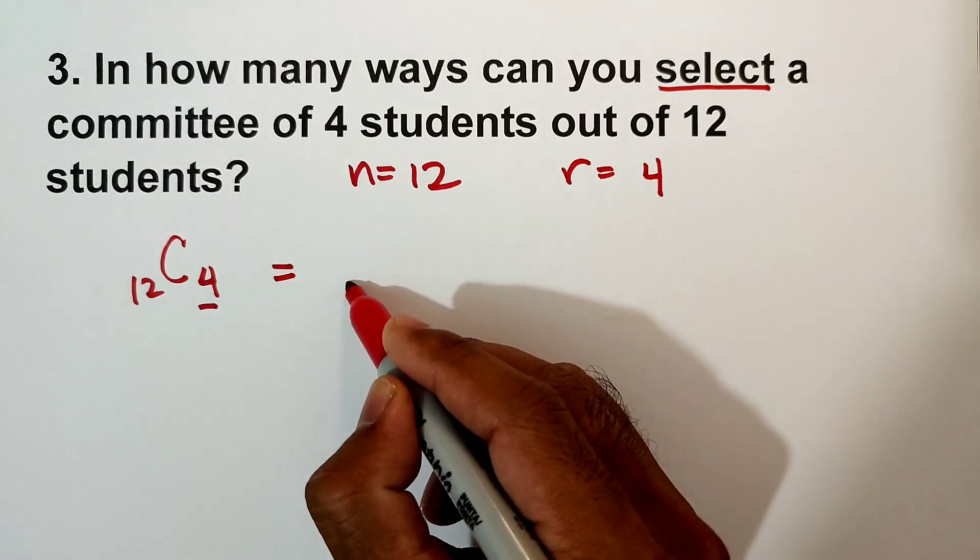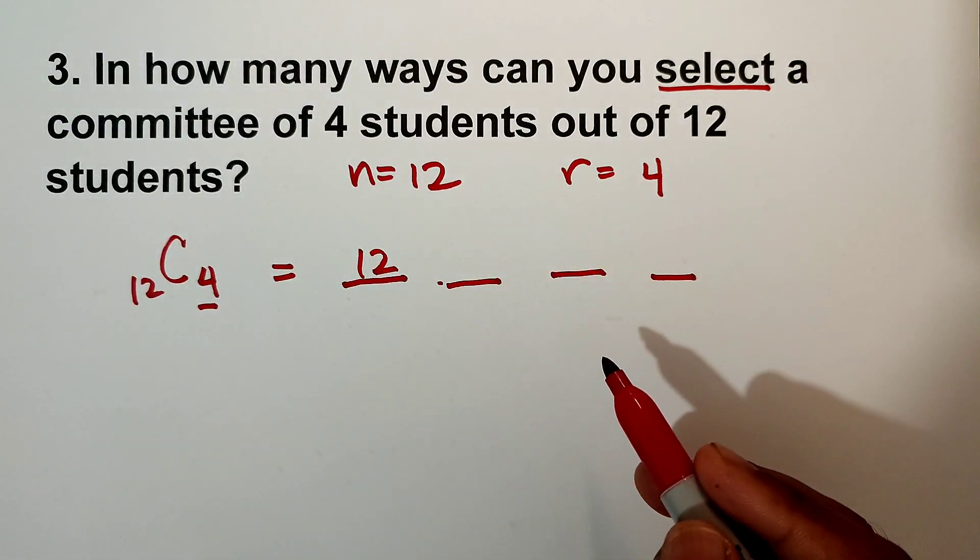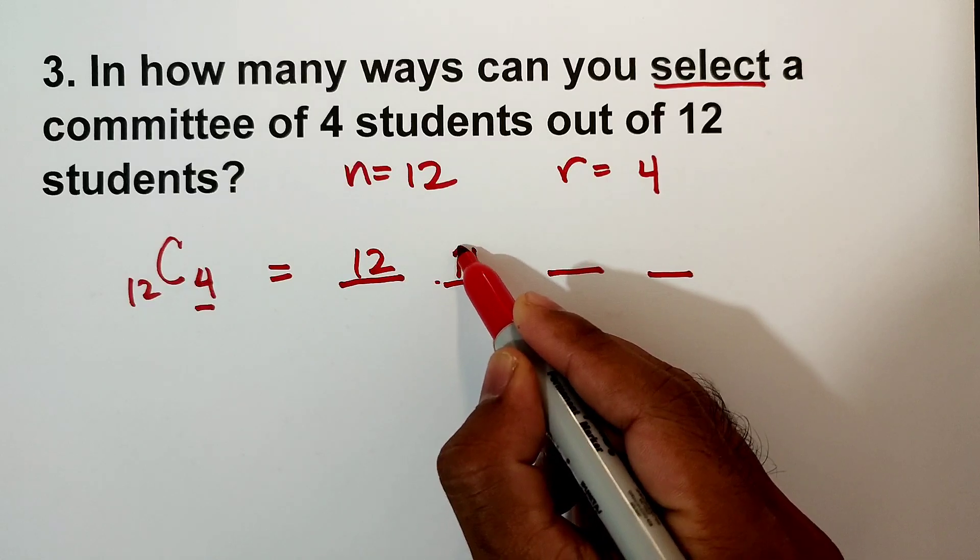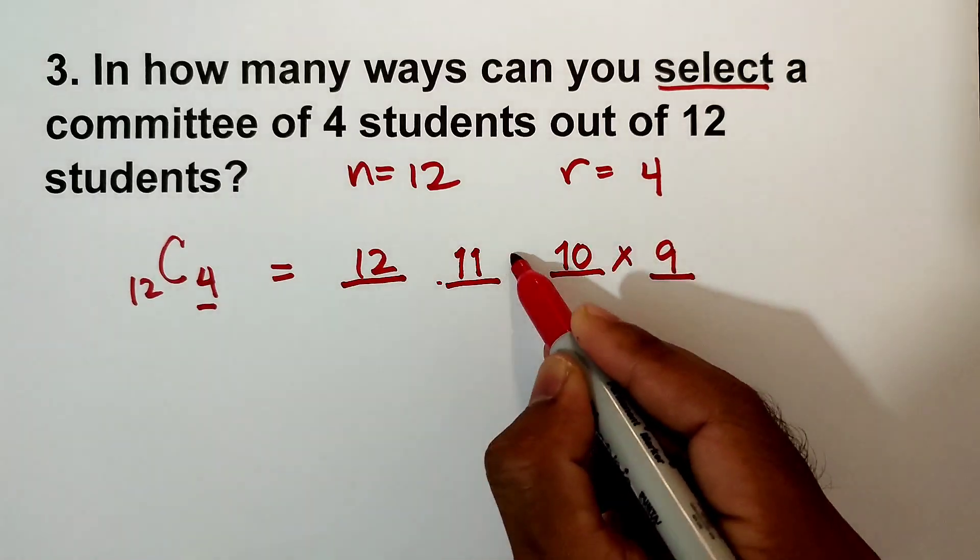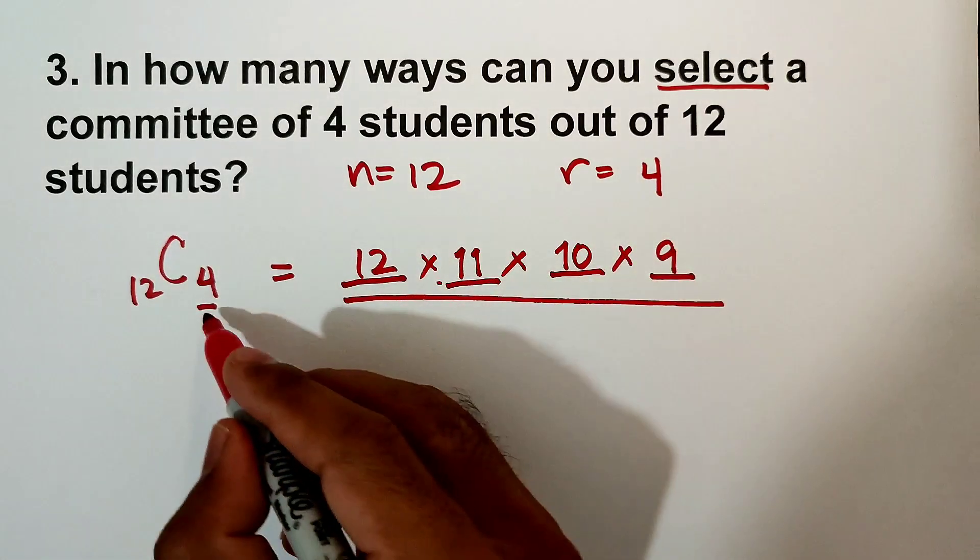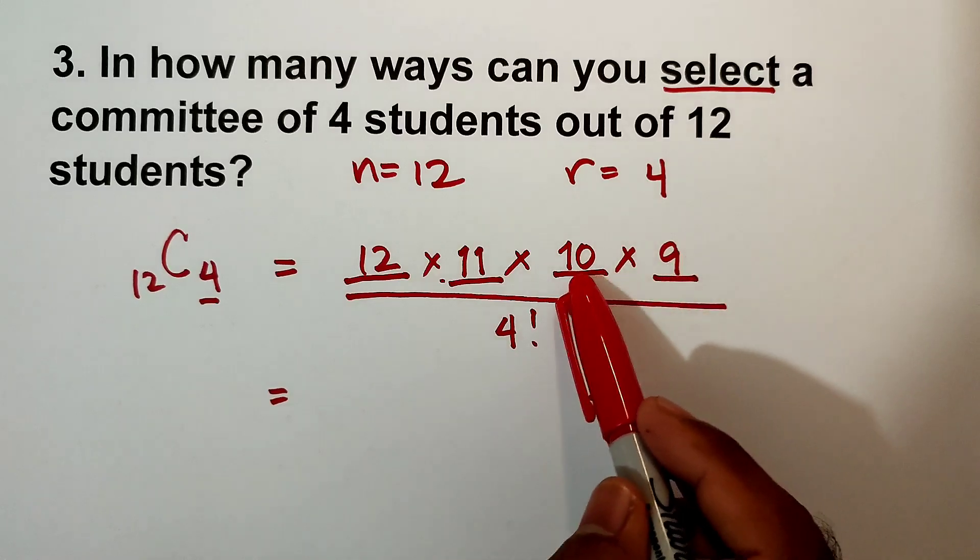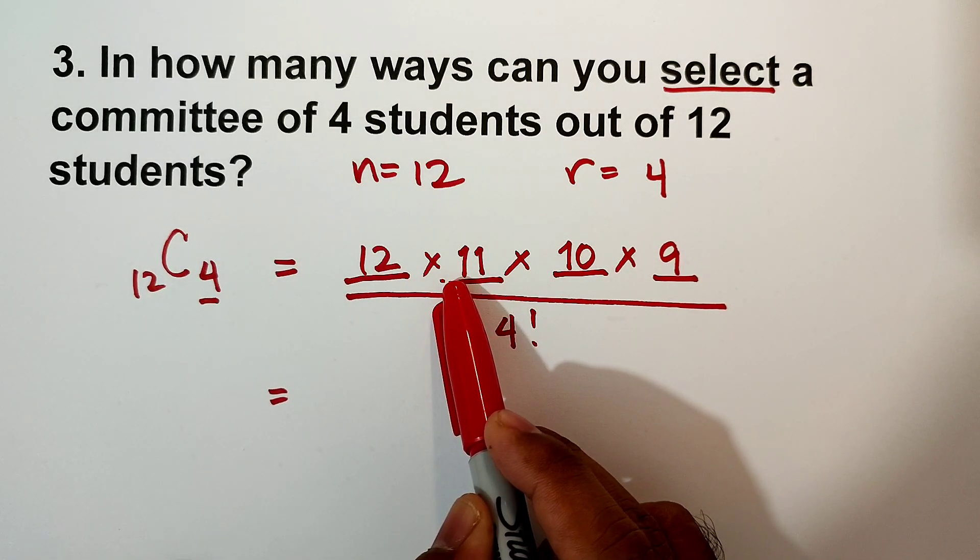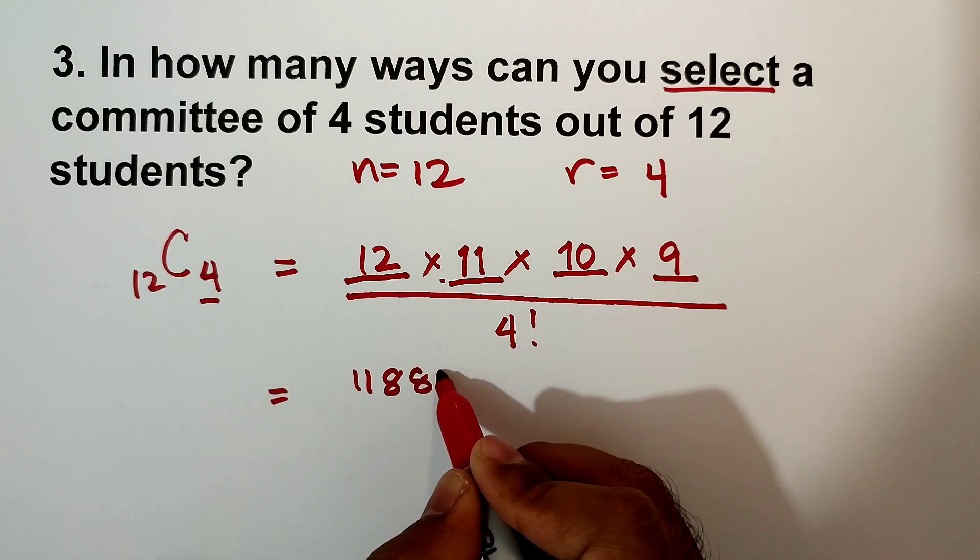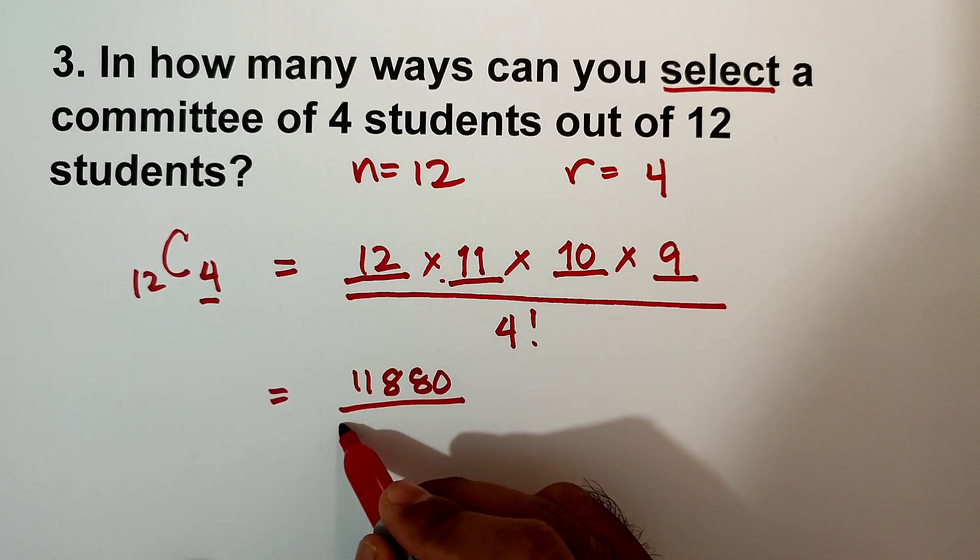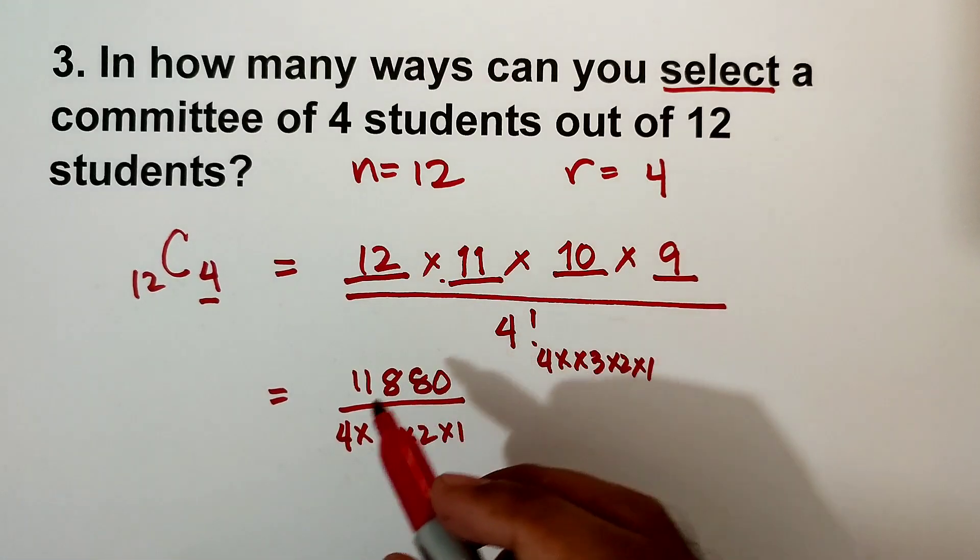So let's do the easiest method. r is 4, so 4 lines. Then start with 12, minus 1 is 11, 11 minus 1 is 10, minus 1 is 9. Multiply that and divide by r factorial. So our r is 4, so 4 factorial. Again, 9 times 10 is 90, times 11 is 990, times 12, so that is 11,880 divided by 4 factorial.